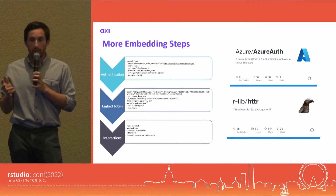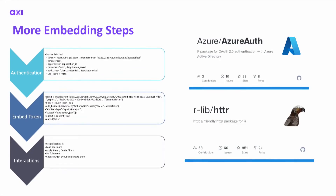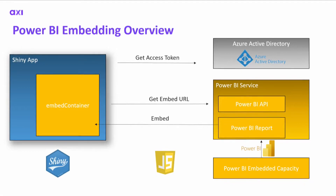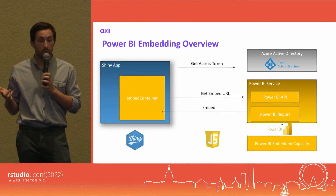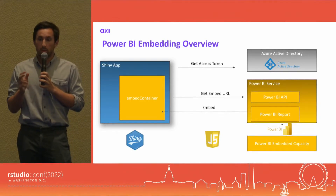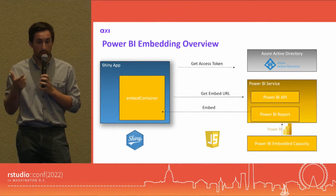To realize authentication and more complex interactions, additional embedding steps were needed. For authentication we used the AzureAuth package, together with the HTTR package for retrieving the embed token, making it possible to integrate authentication within the Shiny app — eliminating the need for two separate authentications. The Power BI API was then used to create bookmarks, apply and delete filters, and more.